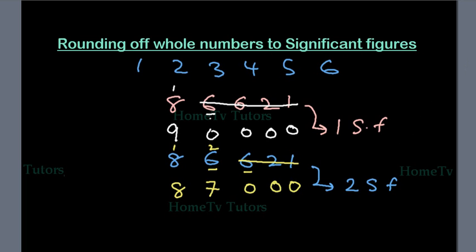If we still want to round off the same number 86621 to 3 significant figures, we start counting from the left: 1, 2, 3.